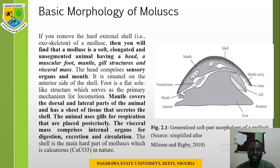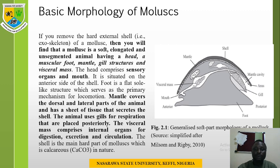The animal uses gills for respiration, which are placed posteriorly. The visceral mass comprises the internal organs for digestion, excretion, and circulation. The shell is the main hard part of Mollusca, which is calcareous in nature.